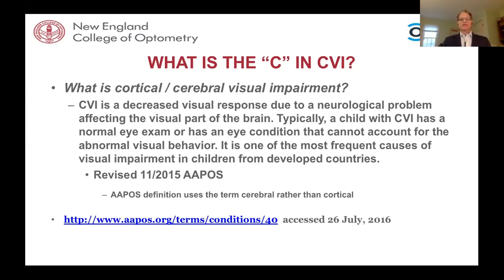AAPOS changed their definition of CVI in 2015, calling it cortical visual impairment — a decreased visual response due to a neurologic problem affecting the visual part of the brain. Typically, a child with CVI has a normal eye exam or has an eye condition that cannot account for abnormal visual behavior. For the first time, an eye care group acknowledges that you can have issues in both the anterior and posterior visual pathway, where anterior issues do not adequately explain how they're using the vision they have.